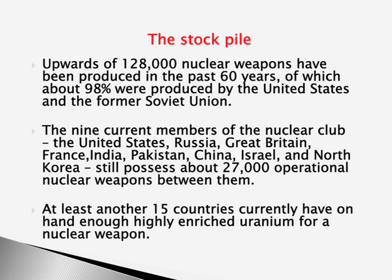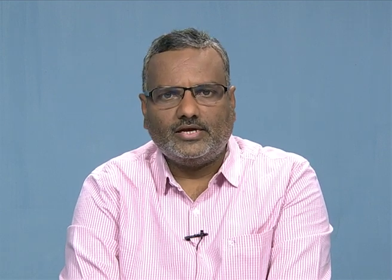Stockpiling is another big problem because each stockpile gets retired over a period of time. Upwards of 128,000 nuclear weapons have been produced in the past 60-odd years, about 98 percent produced by the United States and former Soviet Union. The nine current members of the nuclear club — United States, Russia, Great Britain, France, India, Pakistan, China, Israel, and North Korea — still possess about 27,000 operational nuclear weapons. When weapons are not used, there is a high possibility of retirement and decommissioning, which also leads to serious radiation problems. At least 15 other countries currently have enough highly enriched uranium for nuclear weapons.